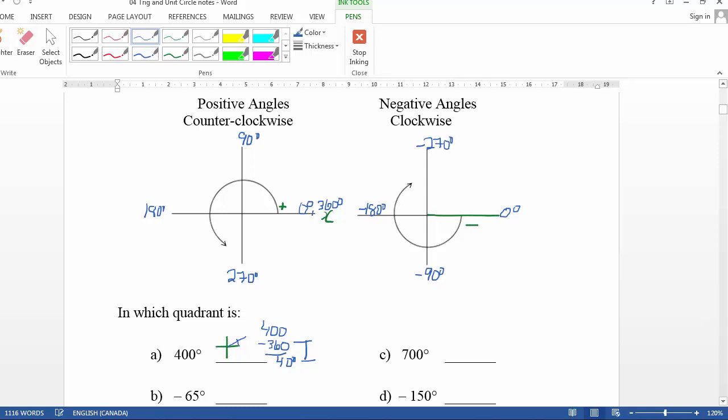So that might make it easier for us to answer these questions here. So part B is negative 65. So negative 65. We're looking at our negative diagram here. So this would be in this quadrant here. And that's quadrant number one, two, three, four. So we put quadrant number four there.